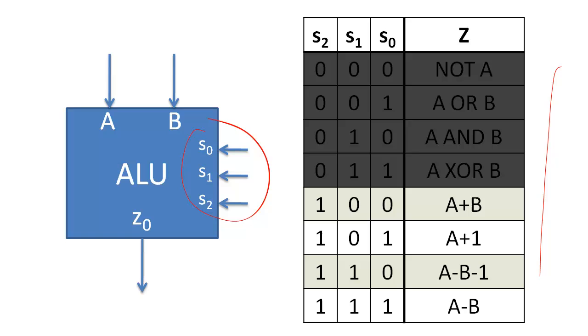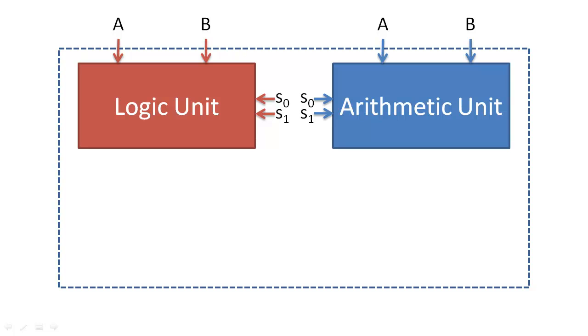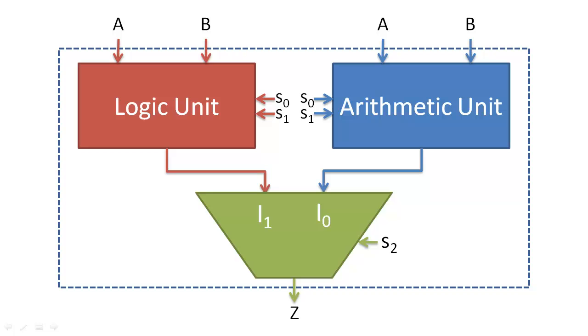Based on the general specifications of this ALU, it will be simpler to create separate logic units and arithmetic units. We will then design a circuit that will select the correct output based on S2. The details of the selection circuit are described in the multiplexer lecture.